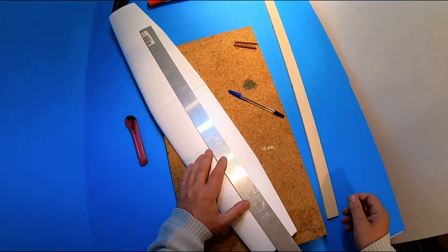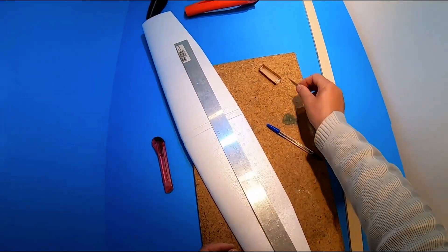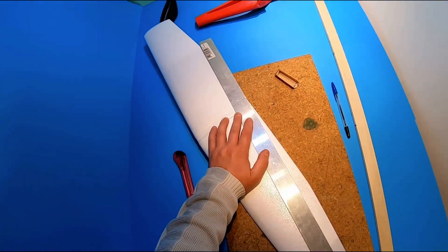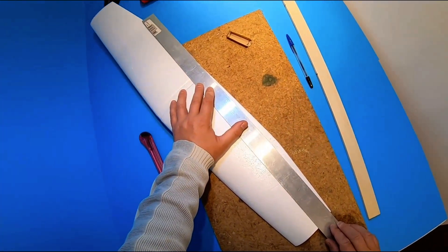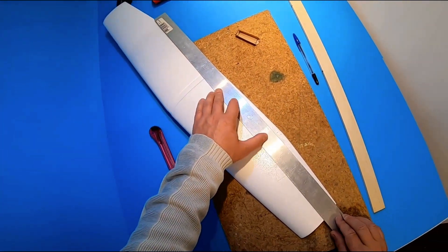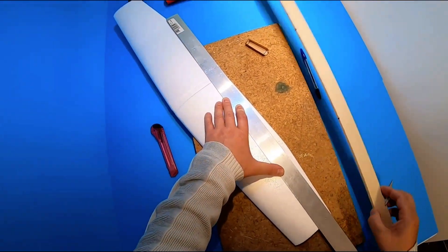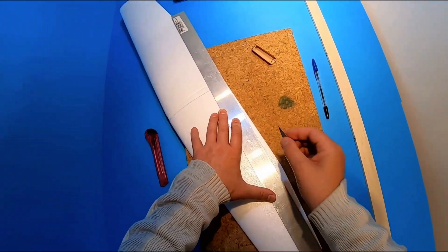I'm going to use a fresh blade from where my mark is to the edge there and just slice that off, so I've got a nice straight edge for my trailing edge to go into.